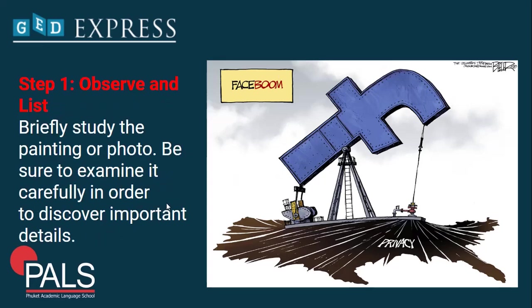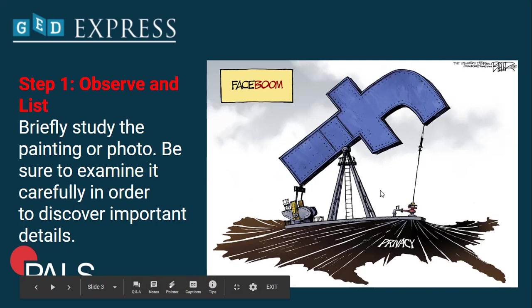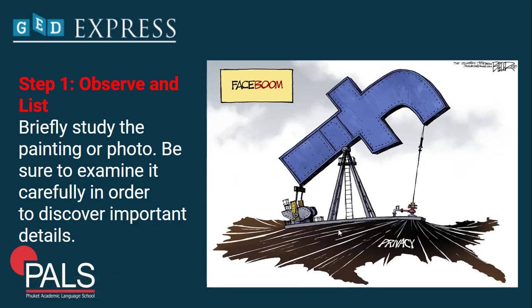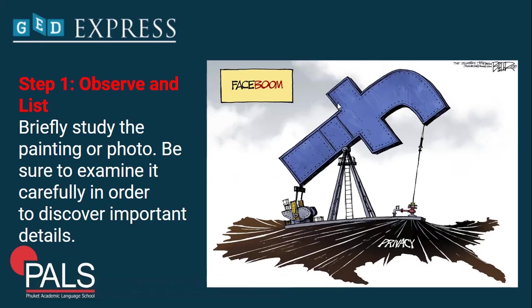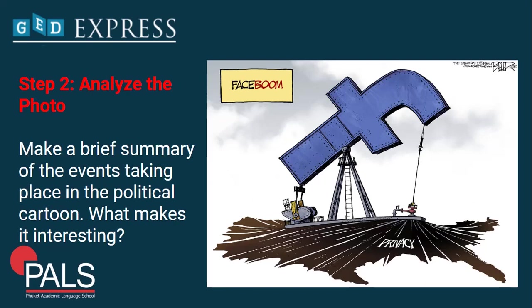In the photo you can see an oil pump, and just below the ground you can see the word 'Privacy' using the icon of Facebook — the Facebook icon serves as the oil pump. An oil pump is used to extract oil from underground. Those are the things you have to take note of when observing and listing the details.